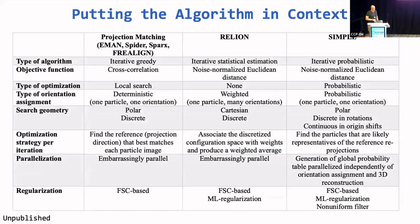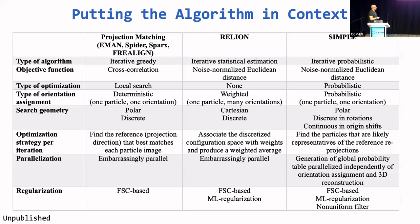To put it in context: projection matching as implemented in EMAN, SPIDER, SPARX, or FreeAlign is an iterative greedy algorithm. RELION is an iterative statistical estimation algorithm — if you look at expectation maximization of Gaussian mixture models, you will feel at home. Whereas SIMPLE is an iterative probabilistic optimization algorithm where the weights are actually used to control search decisions rather than to control averaging. In projection matching, typically cross-correlation is used, whereas we use — as do Astrid Liang and CryoSPARC — noise-normalized Euclidean distance.